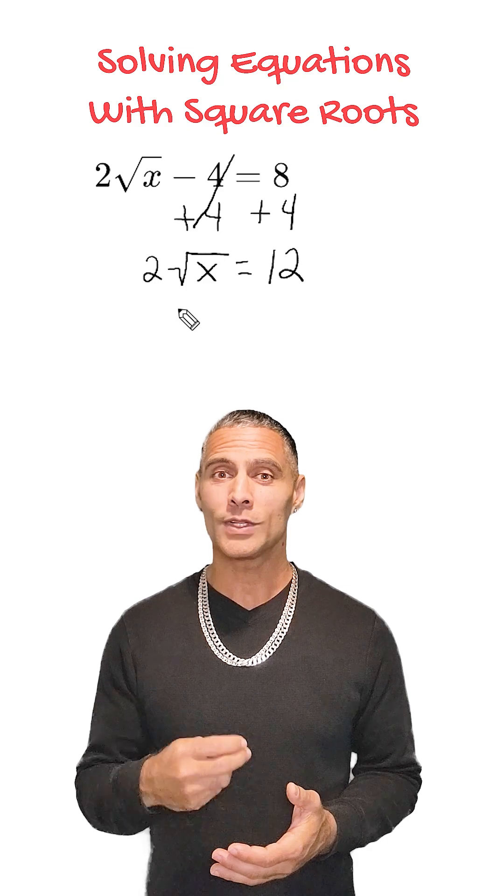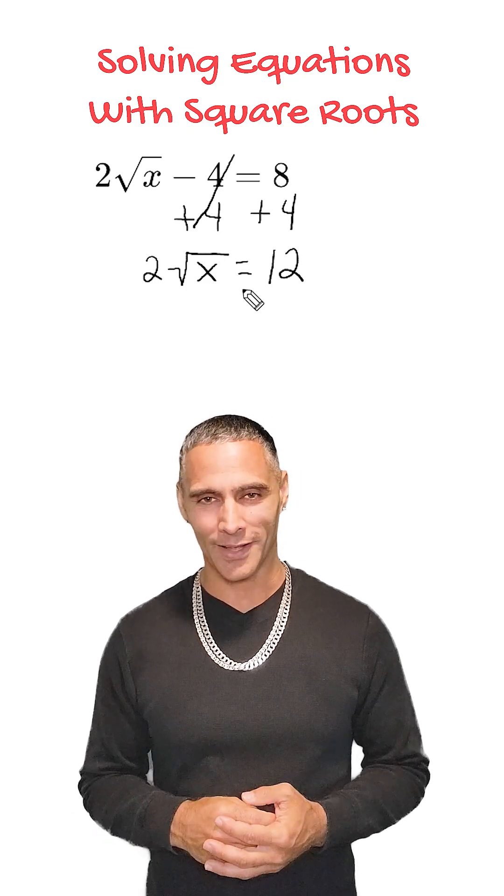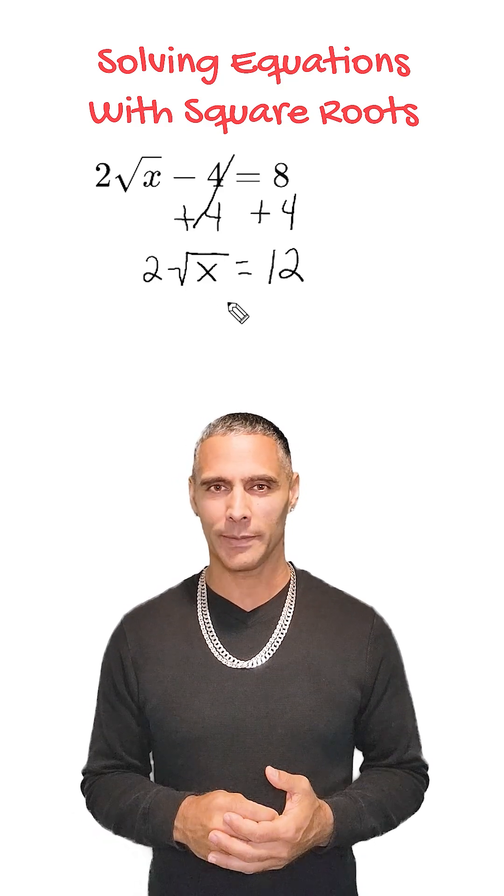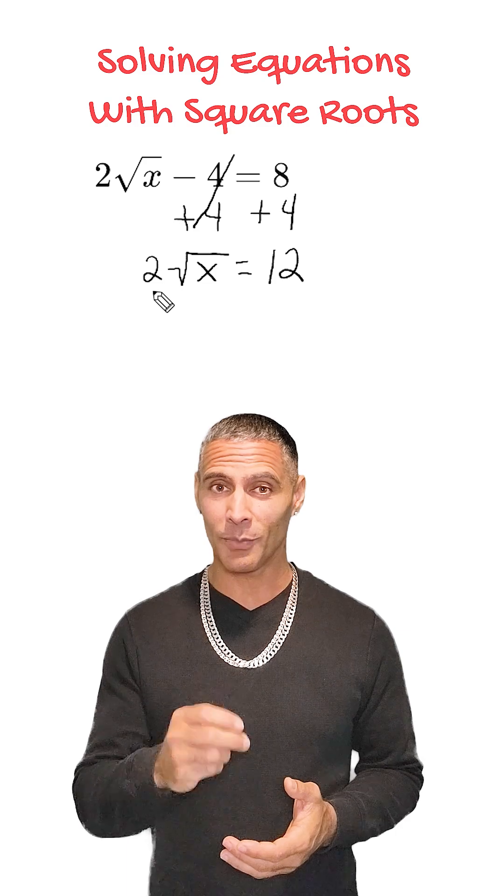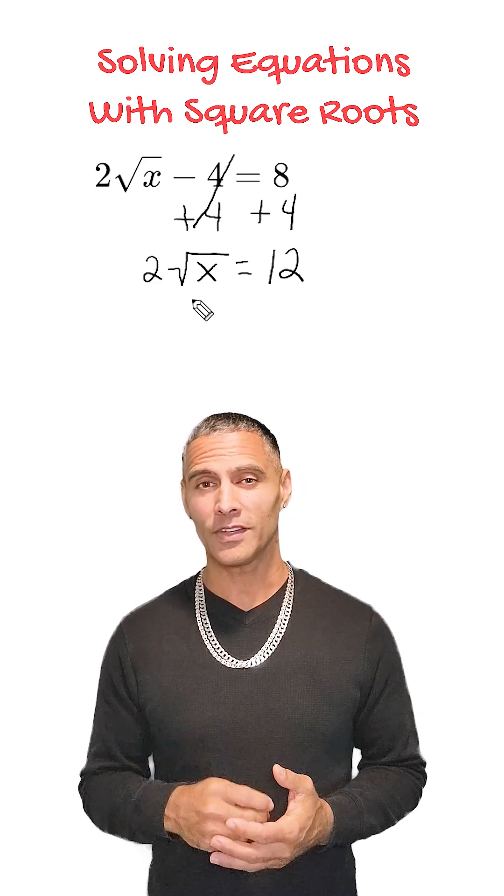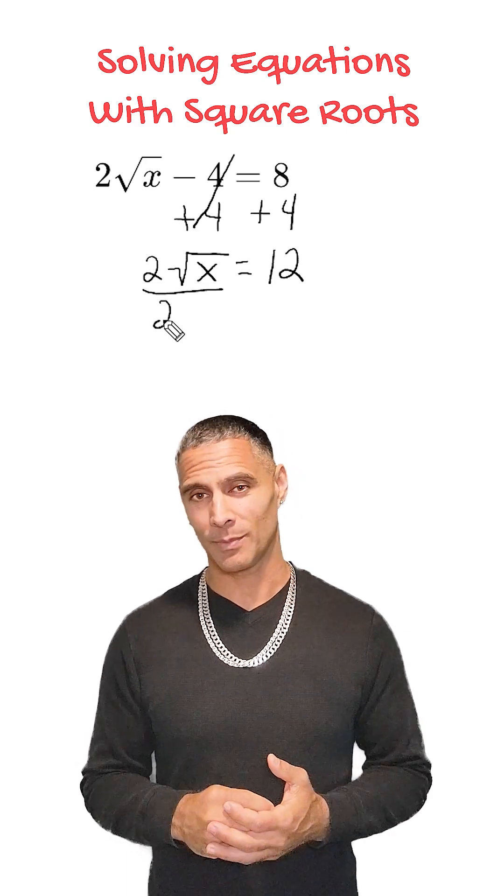Now we have the equation 2 times the square root of x is equal to 12. Next, we need to eliminate the coefficient 2 that is multiplying the square root. To do this, we divide both sides of the equation by 2.